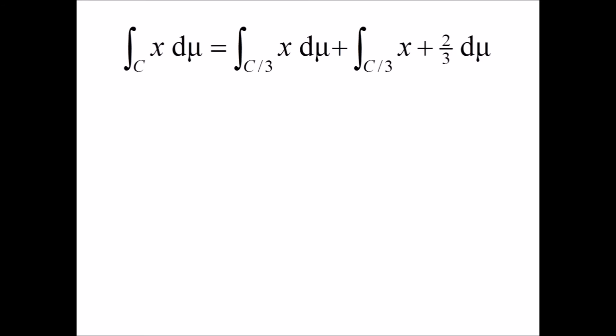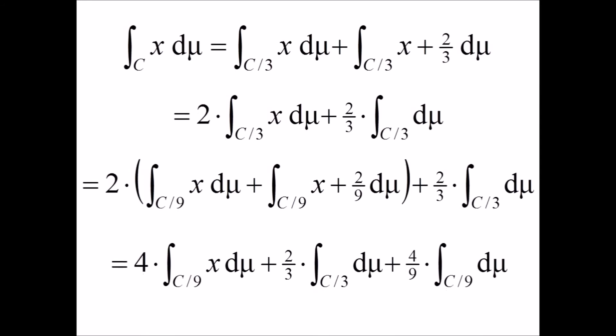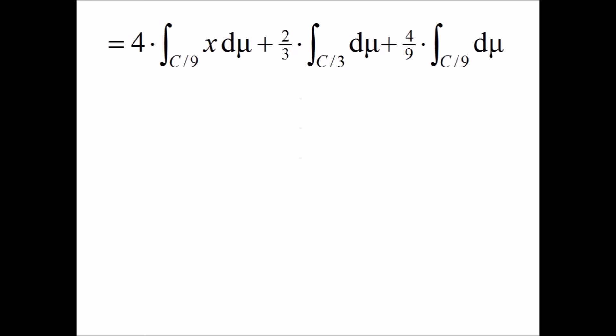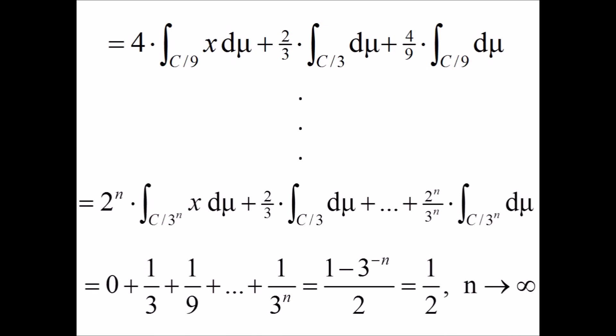Since one of the smaller Cantor sets starts two-thirds of the way along the unit line, we need to evaluate the function from that point rather than from zero. Doing this and simplifying yields the original integral in terms of an integral over a smaller Cantor set and a constant factor. We can then express this new integral in terms of even smaller Cantor sets, and continuing this process yields a summation. The first term can be evaluated since as n goes to infinity the only value x takes on the interval is zero, allowing it to be factored out. We know the measure for a self-similar piece of the Cantor set, so we can cancel the 2^n term. The remaining terms simplify to a geometric series that evaluates exactly to one-half as n approaches infinity.